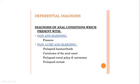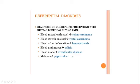The differential diagnosis of anal conditions presenting with pain and bleeding includes fissure. If there is pain with a lump and bleeding, it could be prolapsed hemorrhoids, carcinoma of the anal canal, or rectal prolapse. For conditions presenting with rectal bleeding but no pain: blood mixed with stool suggests colon pathology; blood streaking on stool suggests rectal pathology; blood after defecation suggests hemorrhoids; blood and mucus suggests colitis; blood alone suggests diverticular disease; and melena suggests peptic ulcer.